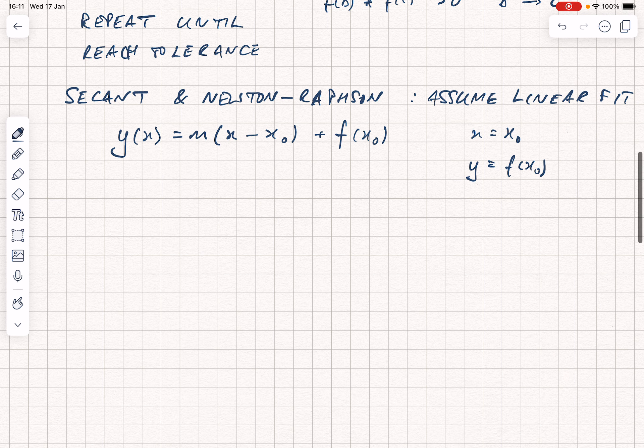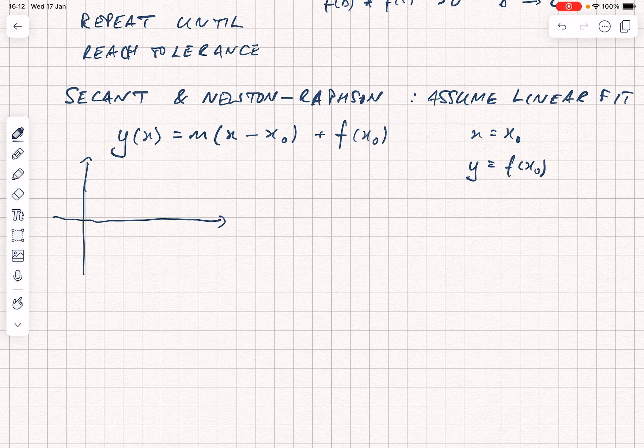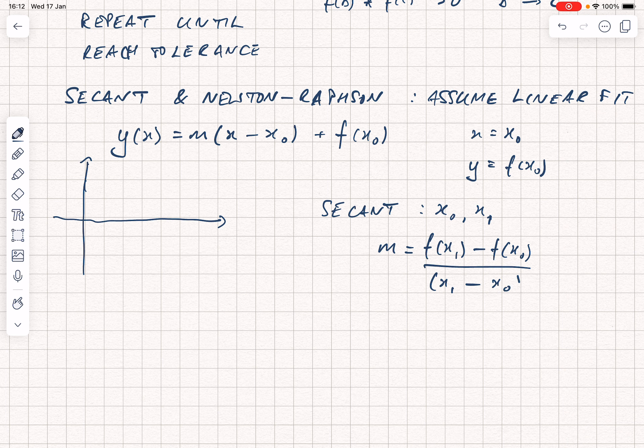If we're using the secant method, we're going to have to have two points. We always start with two points in the secant method, which are going to be x0 and x1. For the secant method, the gradient m is going to be f(x1) minus f(x0) divided by x1 minus x0, which you can also write as delta f over delta x. If we draw our curve here again, here is going to be our x1. Here is going to be our x0.